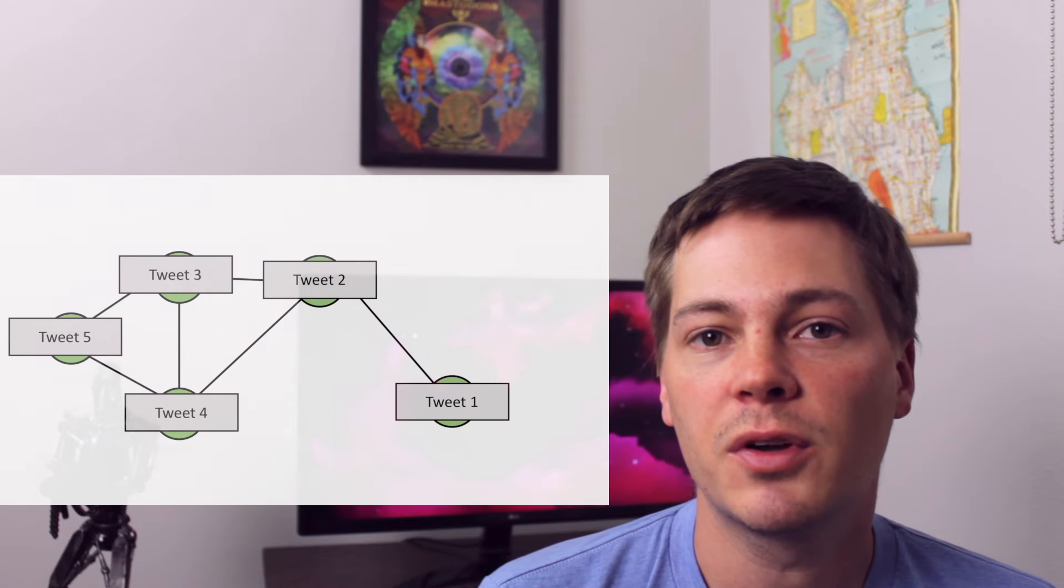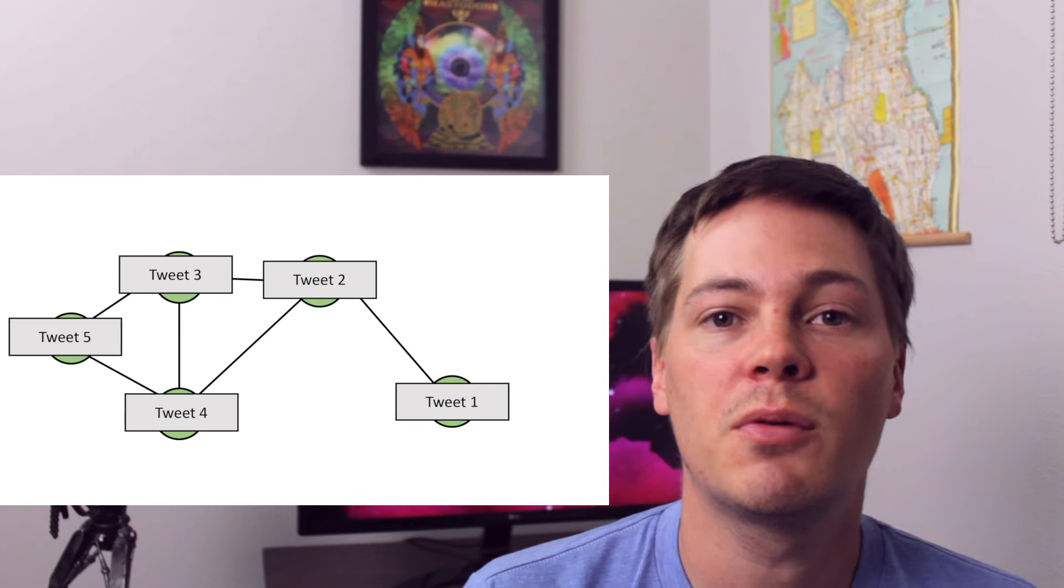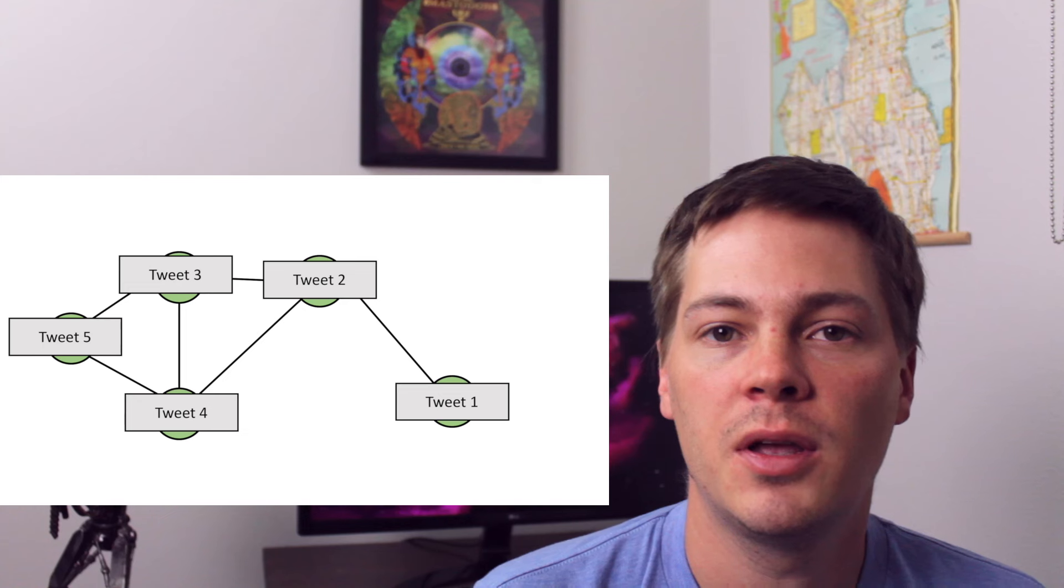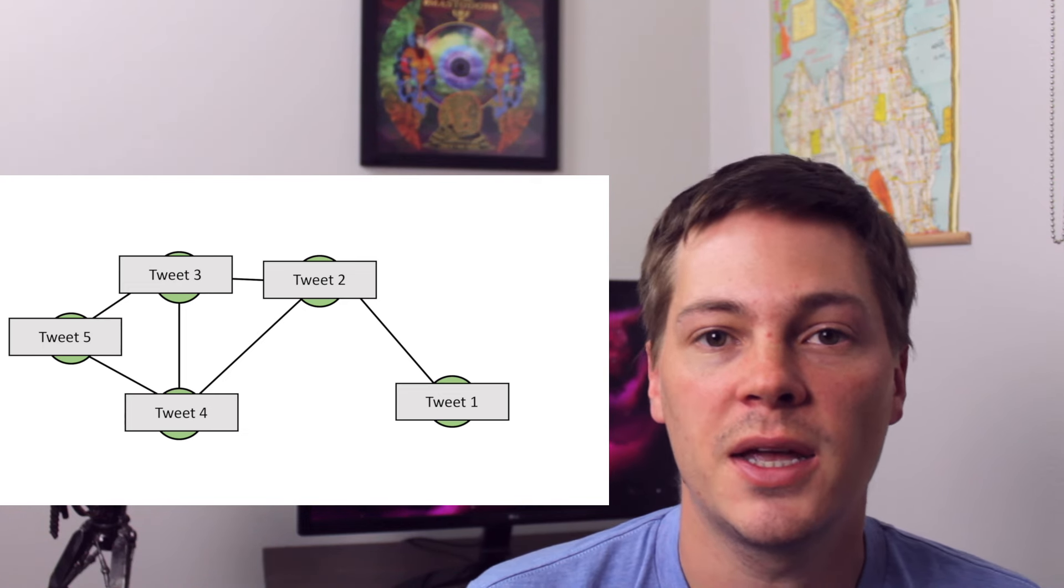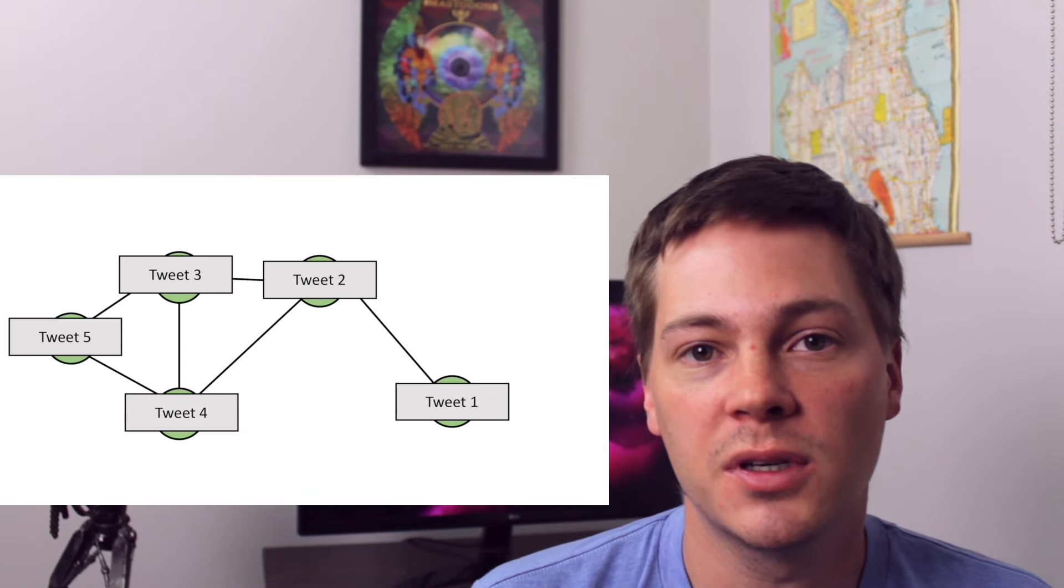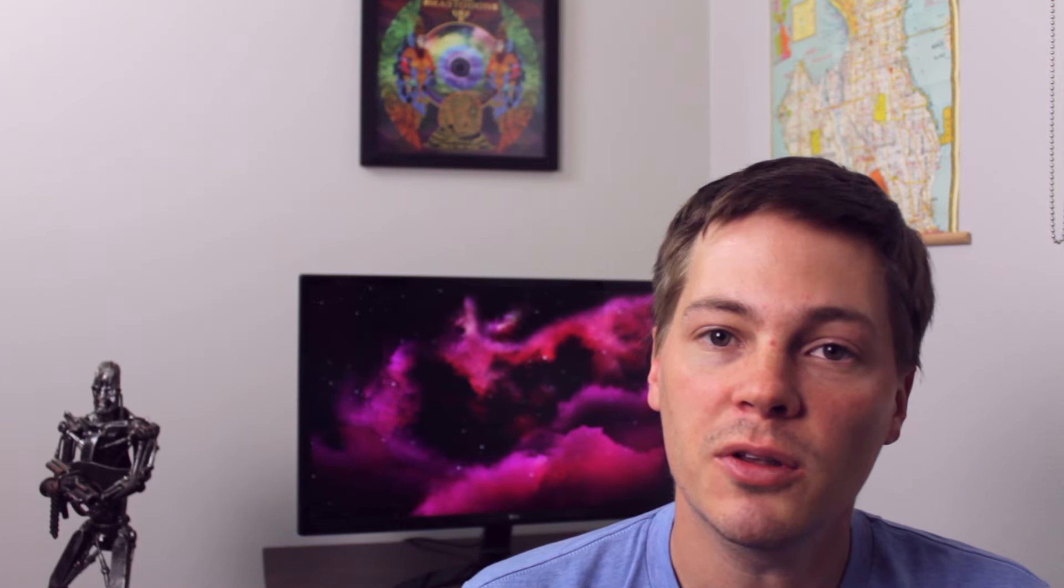Let's talk through a simple content abuse example using a single layer GCN. Let's say we have a graph where each node is a tweet, and then two tweets are connected if they were posted using either the same IP address or the same account. And further, let's say we want to use the actual content of the tweet as a node attribute. So maybe we hash each of the words and count them up, or we do something fancier like using pre-trained word embeddings. But regardless of technique, let's say we end up with a 10-dimensional vector representing the content of each tweet.